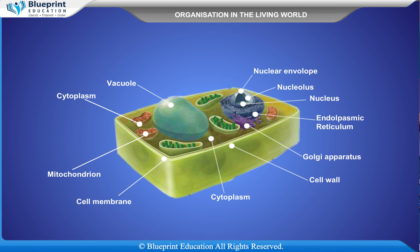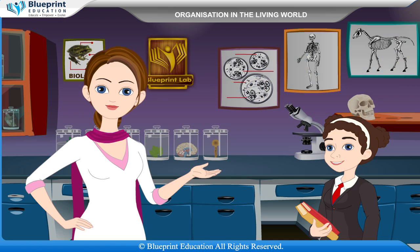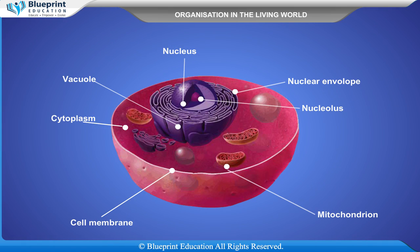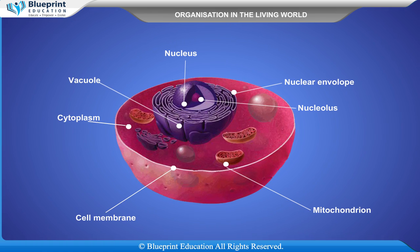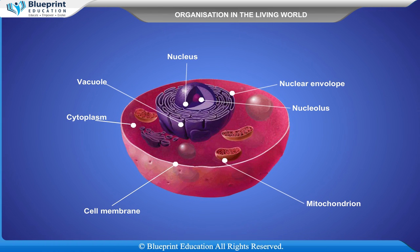The presence of a large vacuole and cell wall confirms that cells of onion peel are plant cells. Animal cells lack cell wall and prominent vacuole. In animal cells, a semi-permeable membrane called the cell membrane surrounds the cytoplasm.